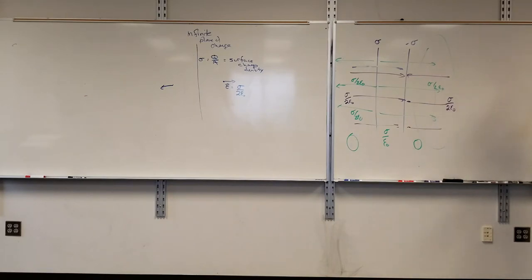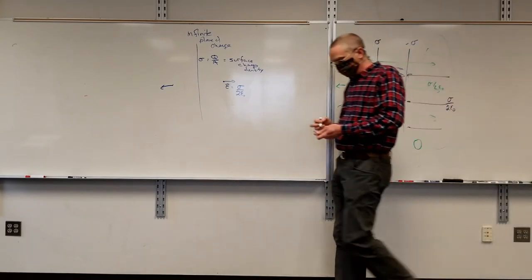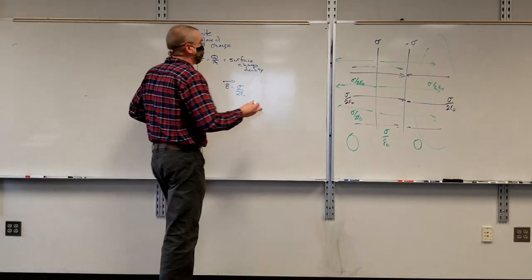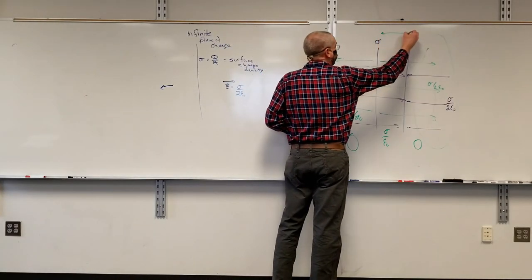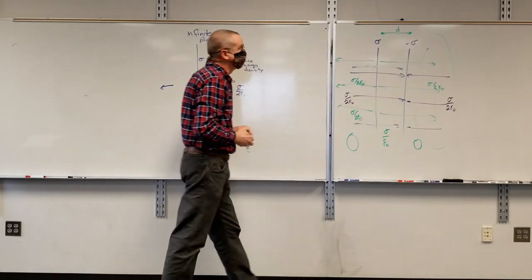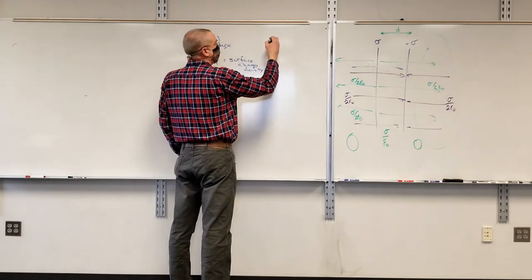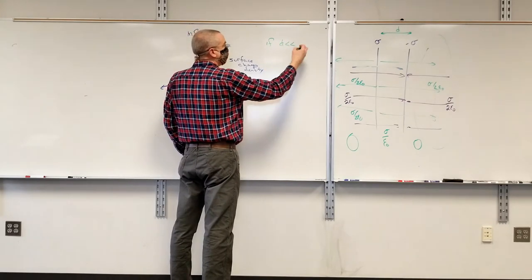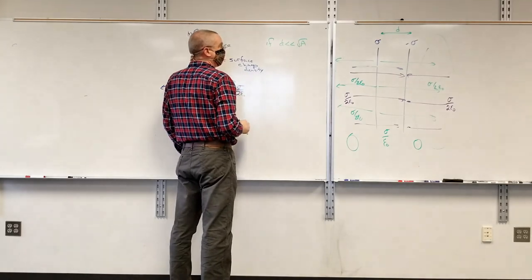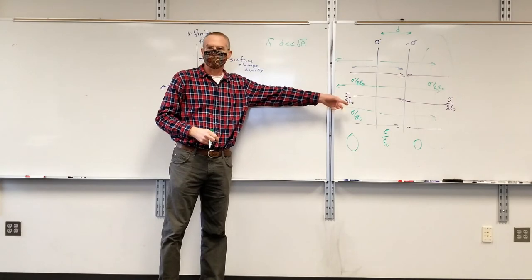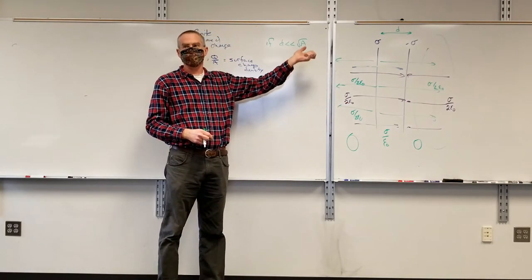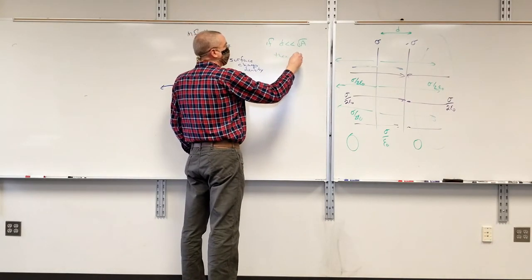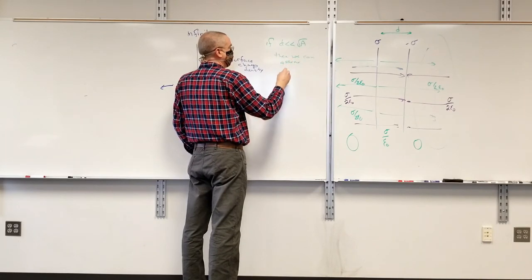So if I have two infinite plates, the electric field in between is a constant — sigma over epsilon sub-naught. In reality, infinite plates are hard to come by, so the question is whether it's close enough that we can make that assumption. Generally yes. If D is small in comparison to the square root of the area of the plate — so if this is a 10-meter by 10-meter plate and D is much less than 10 meters — then we can assume the infinite plate approximation.